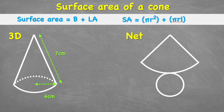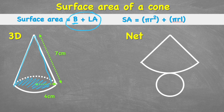When we're finding the surface area of a cone, we can use the formula: area of the base plus the lateral area. This capital B stands for the area of the base, which would be this circular shape at the bottom. And then we add it to the lateral area, which is this cone shape.